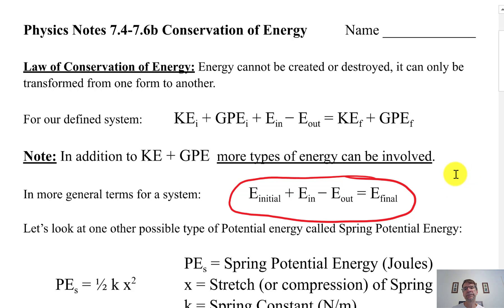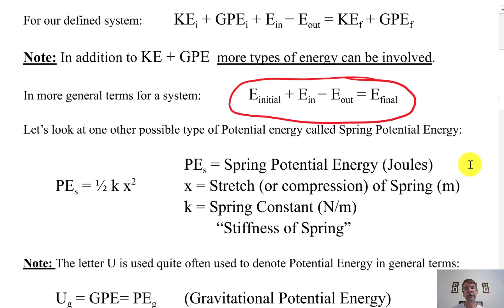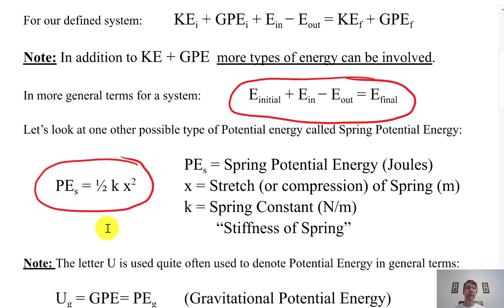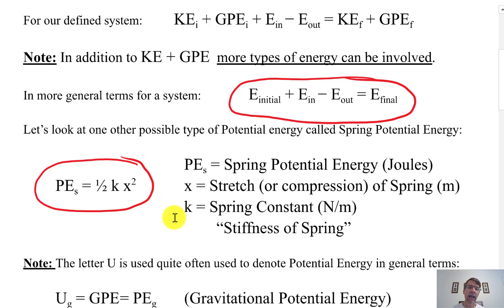Another kind of energy that might show up in the lab or homework is spring potential energy, symbolized as PE sub s. It's measured in joules and looks similar to kinetic energy, but has nothing to do with motion per se — it has to do with how much you stretch or compress a spring. Think of dart guns with suction cups: x represents how much the spring inside compresses, or you can put energy in a spring by stretching it — that's a lot like elasticity.